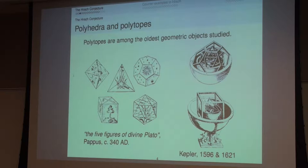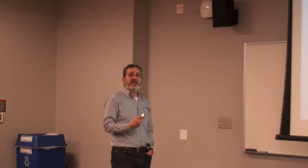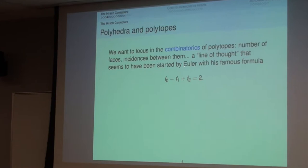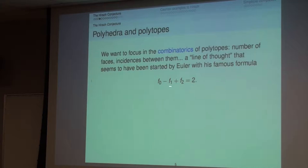People have been interested in polytopes since long ago for various reasons. More recently, we are interested in the combinatorics of polytopes — meaning how many faces they have, how many vertices, how these things relate to one another. The first result in this direction is Euler's formula: for a three-dimensional polytope, the number of vertices minus edges plus faces equals two. This formula generalizes to arbitrary dimension and has a lot of meaning in topology.